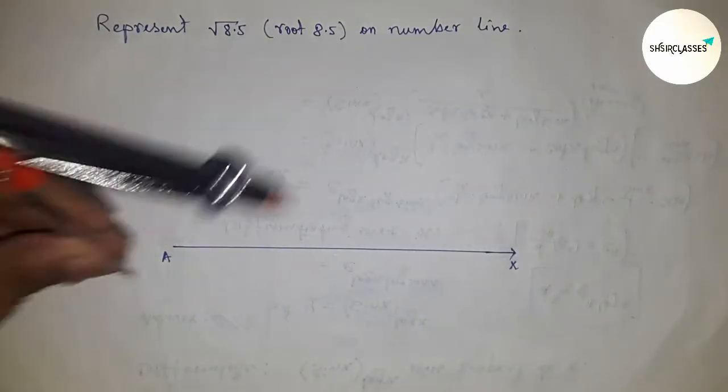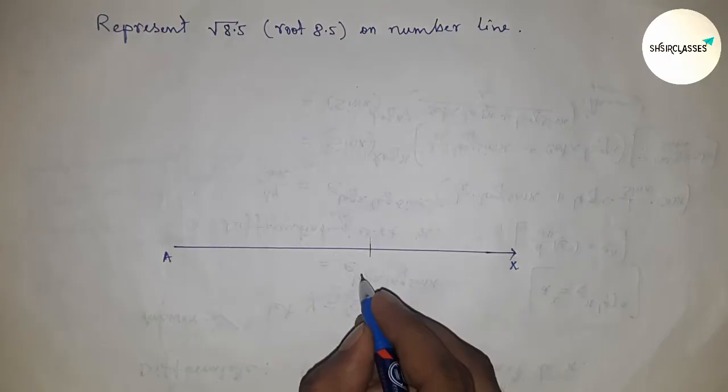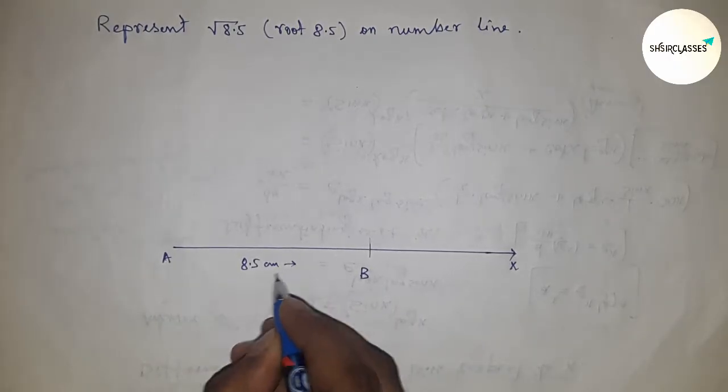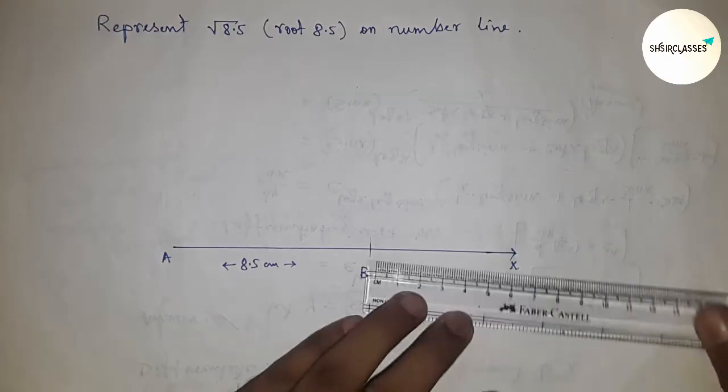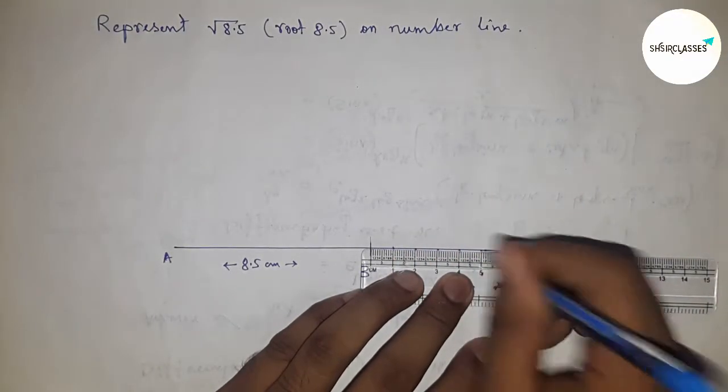Put the compass on point A and cut the line AX at point B, so AB equals 8.5 centimeters. Next, mark the numbers from B to X.